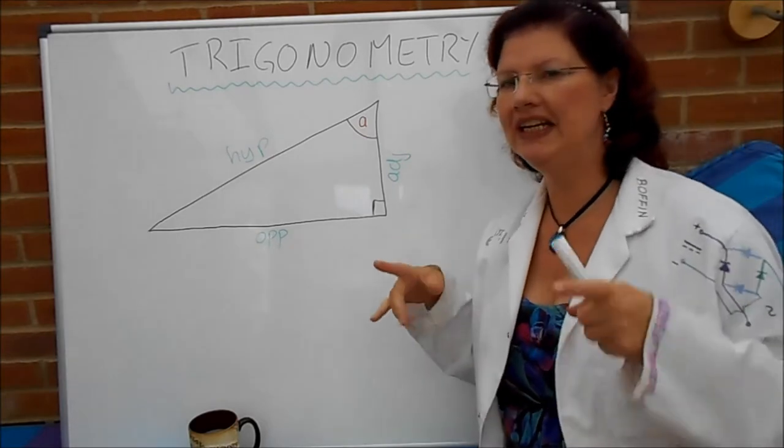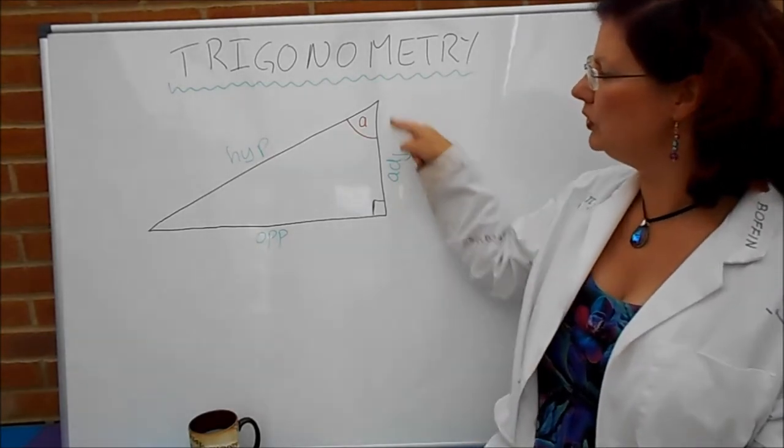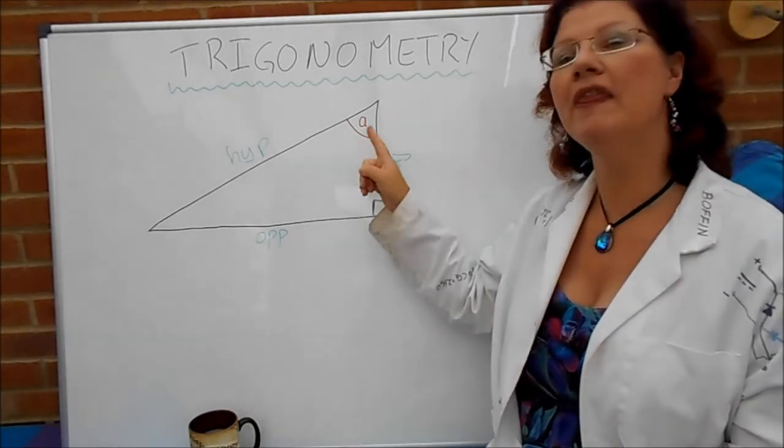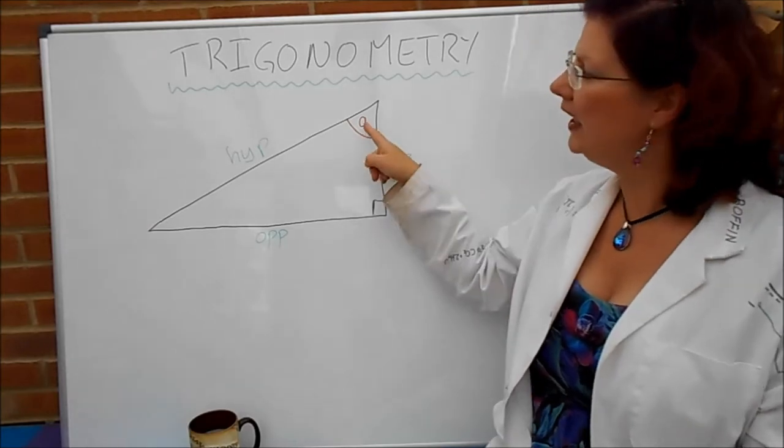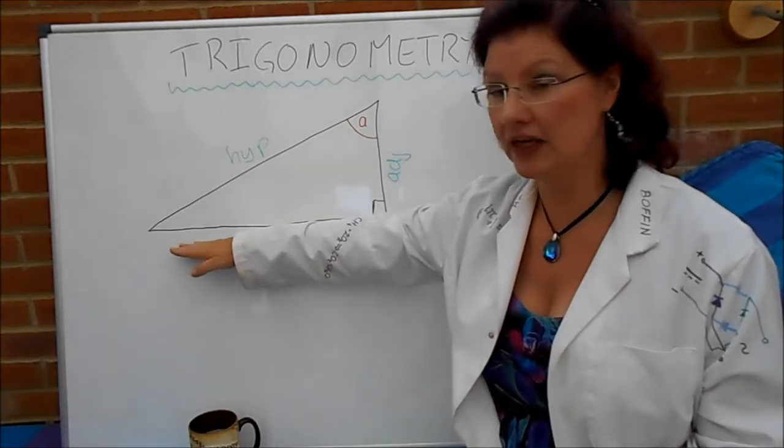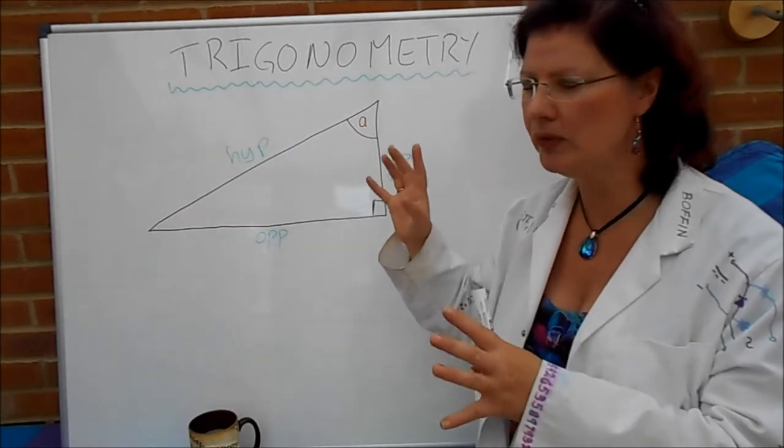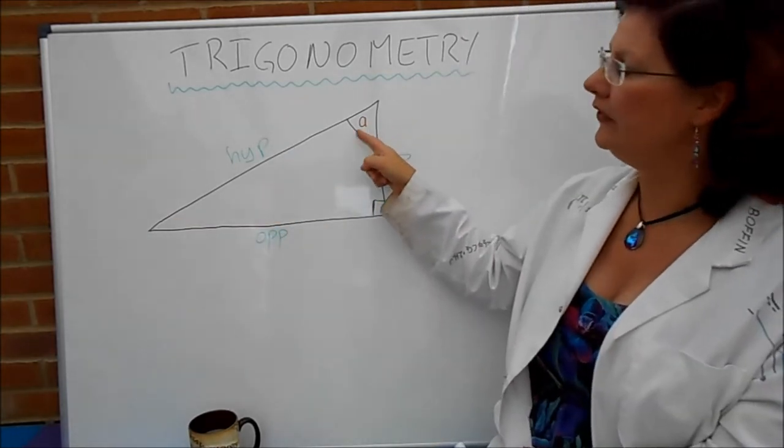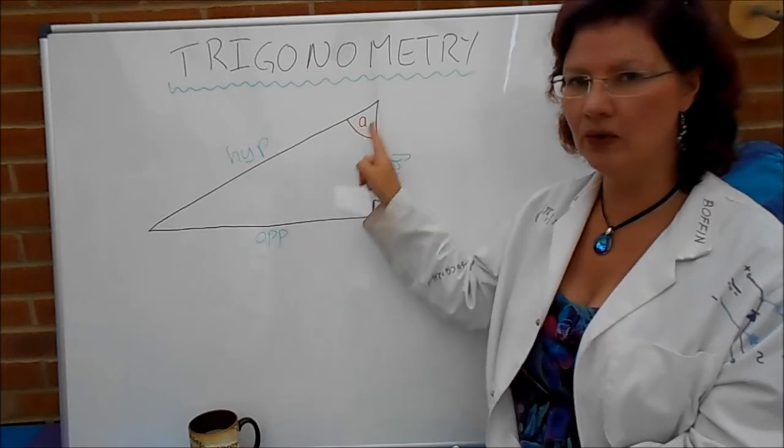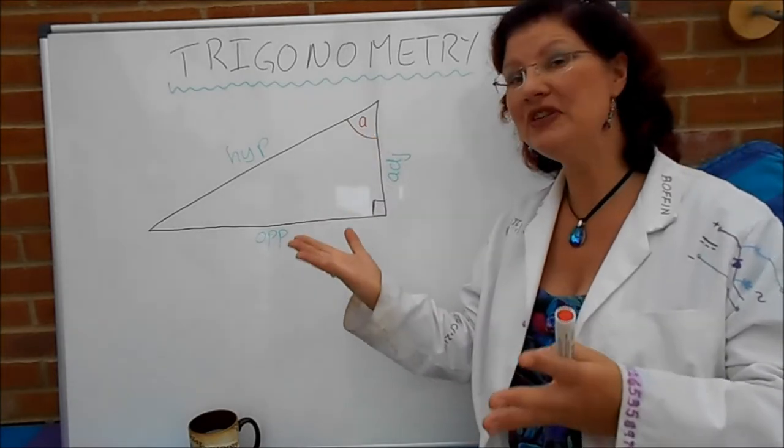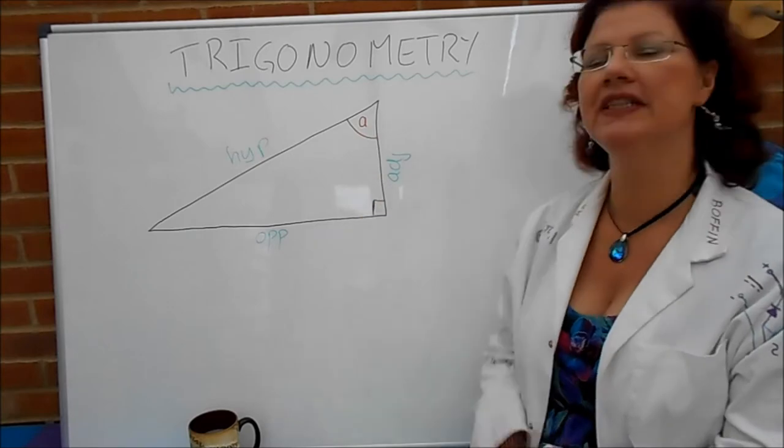Adjacent, which is a posh word meaning next to, is the shorter side that's next to the angle that we're interested in. If the A were down here, then this side would be the adjacent. So it's always next to the angle that you're interested in. And the side that's opposite the angle we call opposite. So hypotenuse, opposite and adjacent.